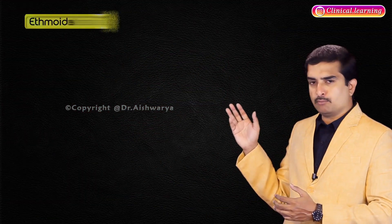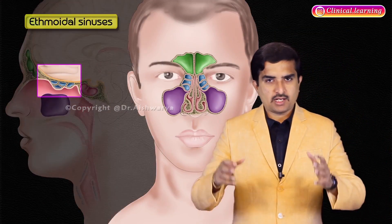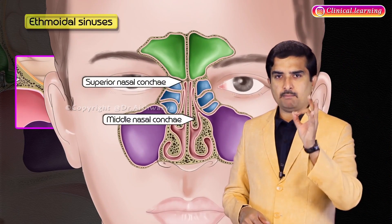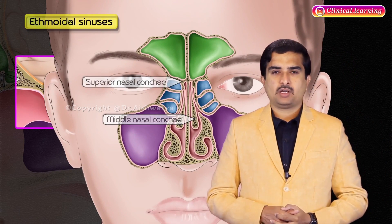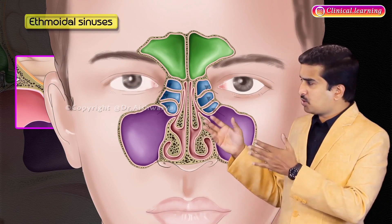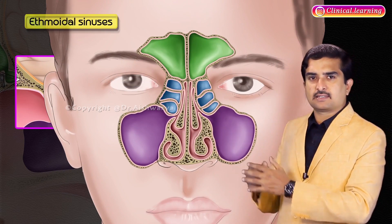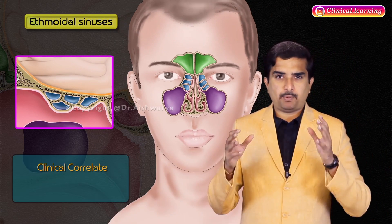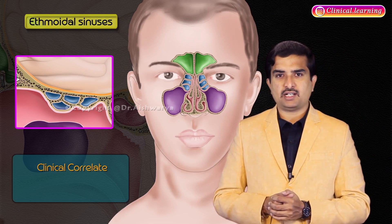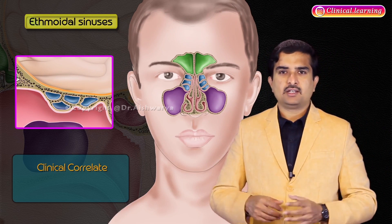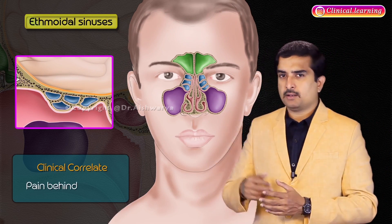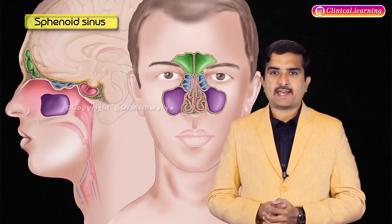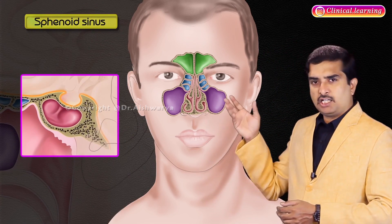The ethmoidal sinus is located in the ethmoid bone between the superior and middle nasal conchae, composed of eight to ten air-filled cells. An important clinical correlate is that the pain of ethmoidal sinusitis creates the sensation of pain behind the eyes.